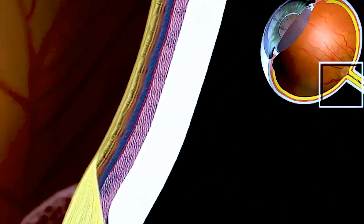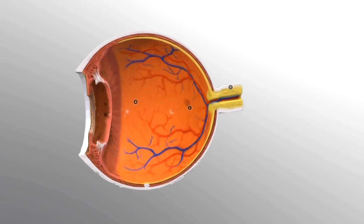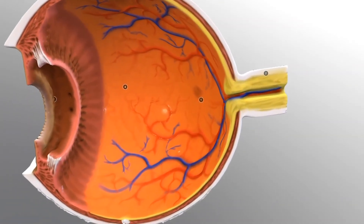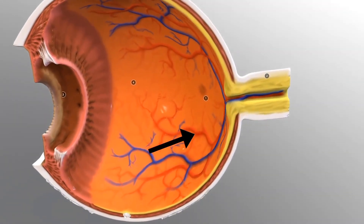Regarding blood supply, the eye receives oxygen, blood cells through arteries, including the central retinal artery.